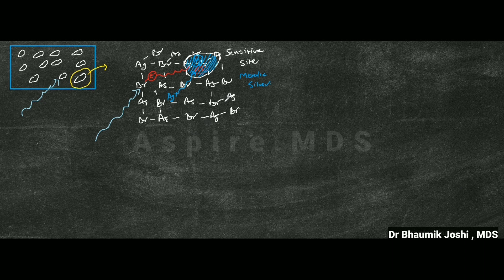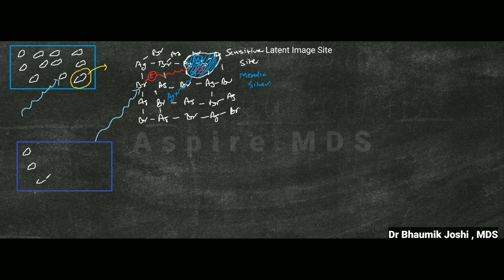This latent image site formation takes place in all of the grains that are present on the film, because x-rays are going to act on multiple grains. So all these multiple grains now have presence of the latent image site on them, which together form the latent image.